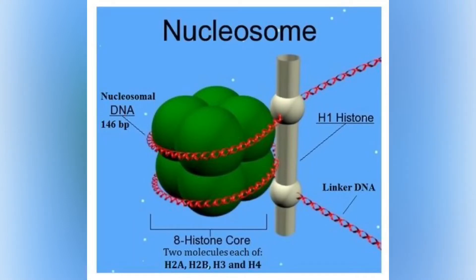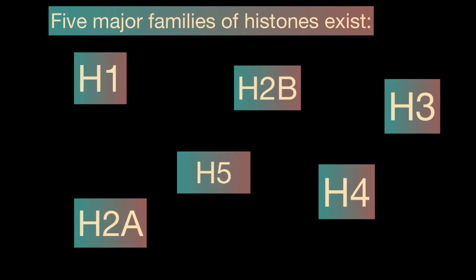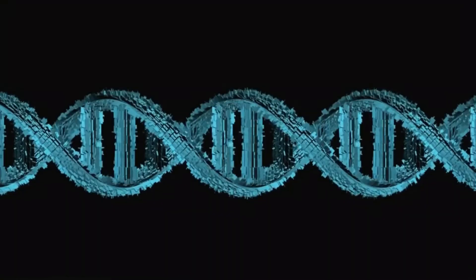Nucleosomes are portions of double-stranded DNA that are wrapped around protein complexes called histone cores. These histone cores are composed of eight subunits — two each of H2A, H2B, H3, and H4 histones. This protein complex forms a cylindrical shape that DNA wraps around with approximately 147 base pairs. Nucleosomes are formed as a beginning step for DNA compaction that also contributes to structural support as well as serves functional roles.